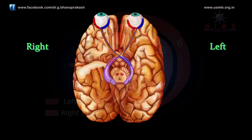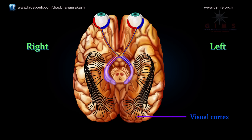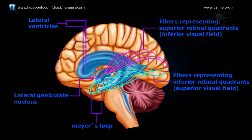From the lateral geniculate nucleus, visual information is relayed to the visual cortex. Most of the axons from LGN neurons form the optic radiations, which terminate in the visual areas in the occipital cortex at the back of the brain. In this lateral view of the brain, axons carrying information about the superior portion of the visual field sweep around the lateral horn of the ventricle in the temporal lobe — a branch called Meyer's loop — before reaching the occipital lobe.